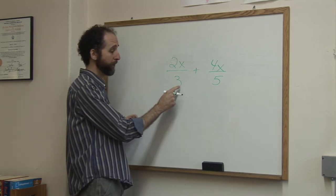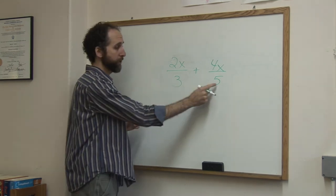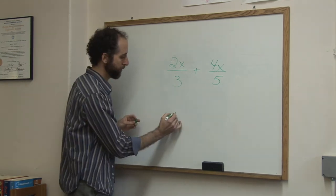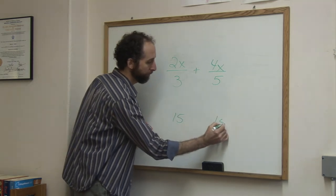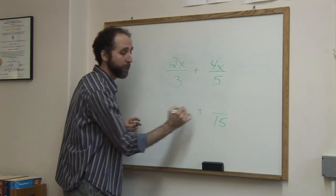It's no big deal. The common denominator is 15 because 3 times 5 is 15. So we're going to do 15 here and 15 here. Put the plus sign so you don't forget it.